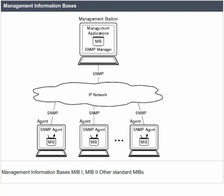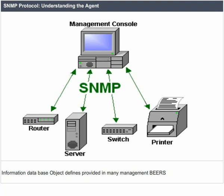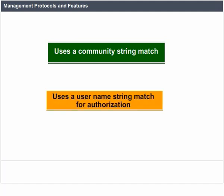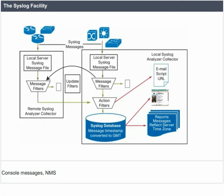Management information base (MIB): MIB 1, MIB 2, and other standard MIBs. SNMP protocol: understanding the agent and information database. Object definitions are provided in many management implementations. Features of management protocols include: uses a community string match, uses a username string match for authorization, the syslog facility, console messages, and NMS.